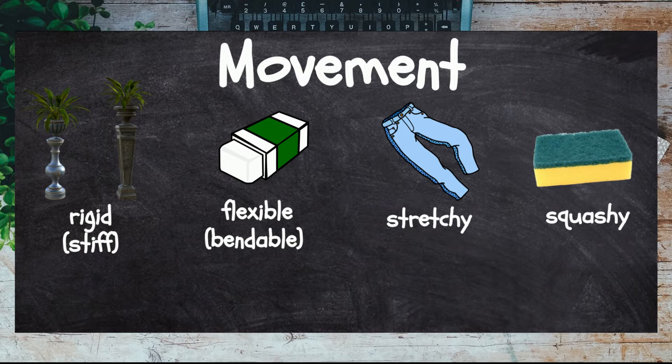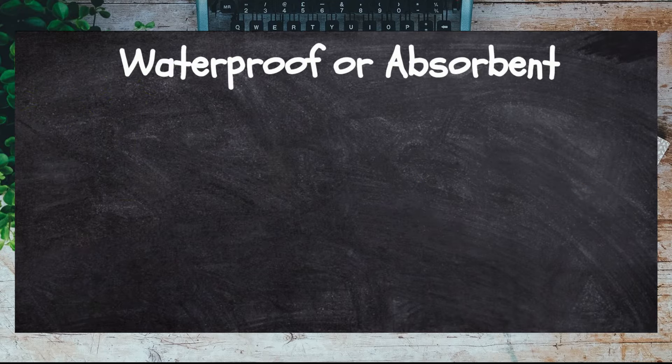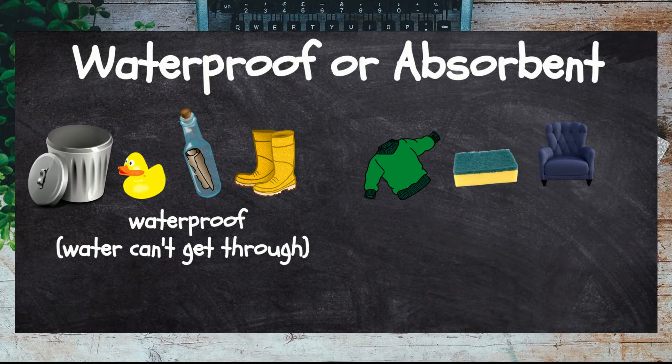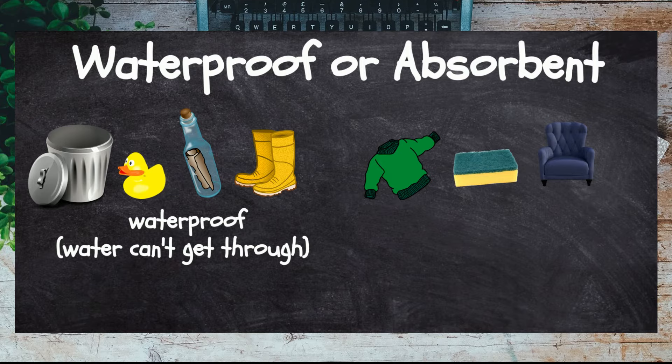When an object is waterproof, water cannot get through it, so items that need to hold water in, such as bottles and buckets, or keep water out, such as raincoats, need to be waterproof.